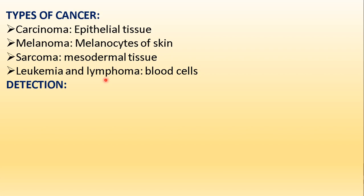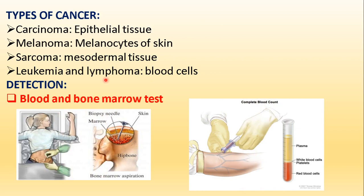If a person is showing certain signs and symptoms, how do we detect whether it is actually due to cancerous growth? One type of test is the blood and bone marrow test. In the bone marrow test, a biopsy needle is inserted through the hip bone into the bone marrow, marrow cells are taken out, and tested for uncontrolled growth. Blood count can also be taken to check for increased cell counts, especially in cases of leukemia and lymphoma.